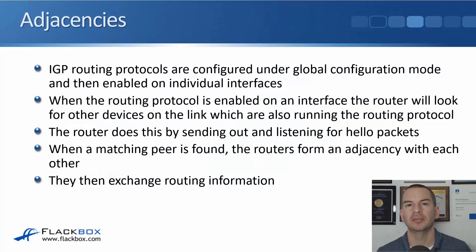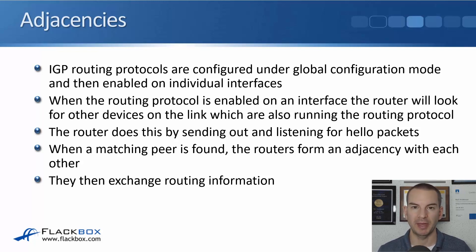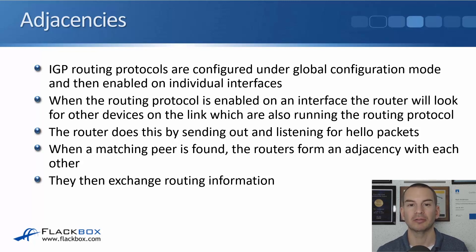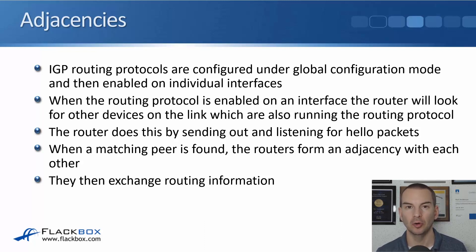In this lecture you'll learn about adjacencies and passive interfaces. Interior gateway routing protocols — RIP, EIGRP, and OSPF — are configured under global configuration and then enabled on the router's individual interfaces. When the routing protocol is enabled on an interface, the router will look for other devices on that directly connected link which are also running the routing protocol in order to peer with them. It does this by sending out and listening for hello packets, and when a matching peer is found the routers form an adjacency and exchange routing updates.